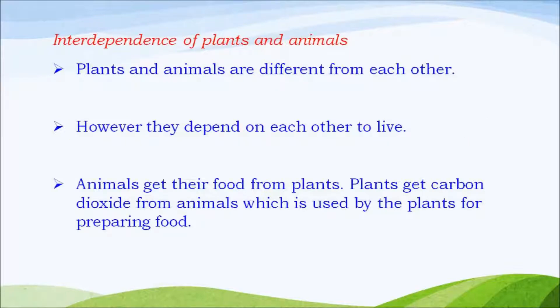Interdependence of plants and animals: plants and animals are different from each other, yet they depend on each other to live. Animals get their food from plants. Plants get carbon dioxide from animals, which is used by the plants for preparing food.